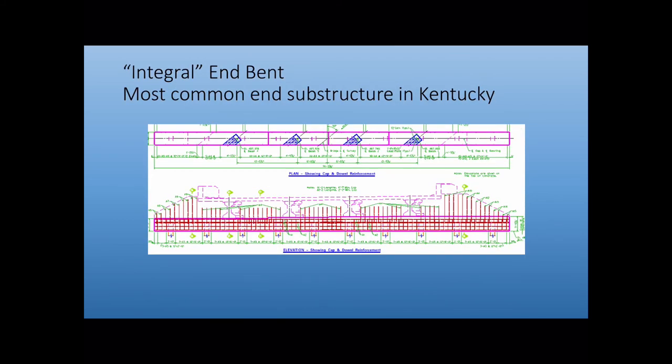Now the integral inbent is our most common end substructure in Kentucky. What that means by integral inbent is the inbent itself actually takes some of the movement in the bridge. So as it warms up or cools down, the bridge is going to expand and contract. And the substructure and the superstructure are connected together at the integral inbent, which allows for the piling here, you can see this piling, they actually move with the bridge to take that movement. This keeps us from having to have an expansion joint at the end of the bridge.